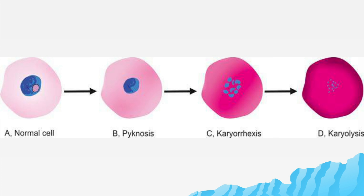In this diagram, cell A is the normal cell. The next cell undergoes pyknosis, where the cytoplasm is more pink and the nucleus is shrunken. The next cell shows karyorrhexis, where the cytoplasm is more pink and the nucleus is fragmented. Cell D shows karyolysis, where the cytoplasm is intensely pink and the nuclear material has disappeared.